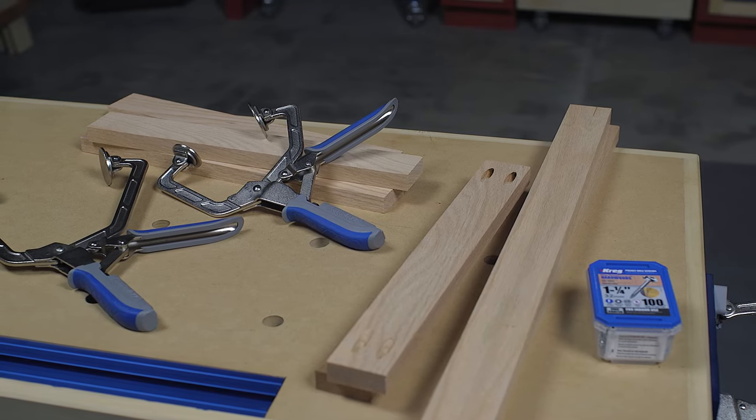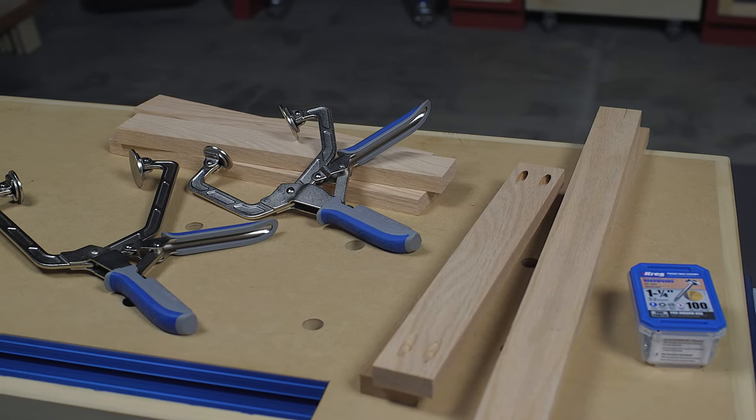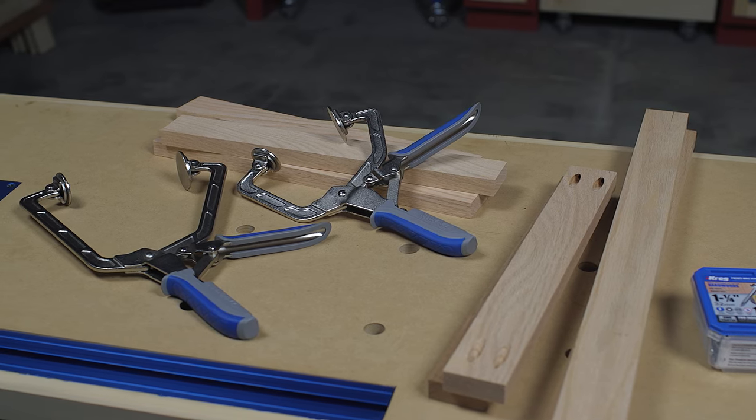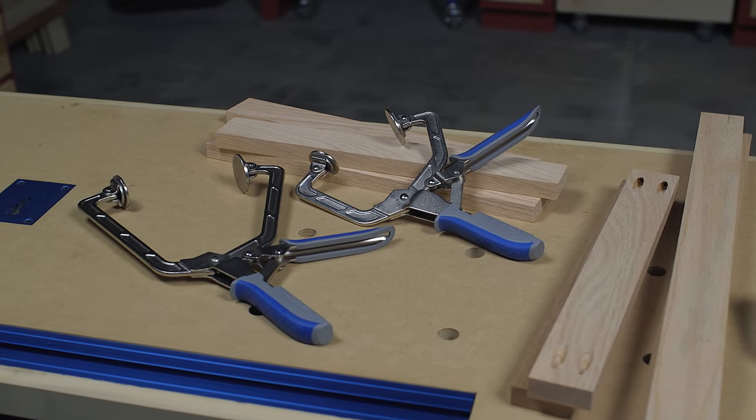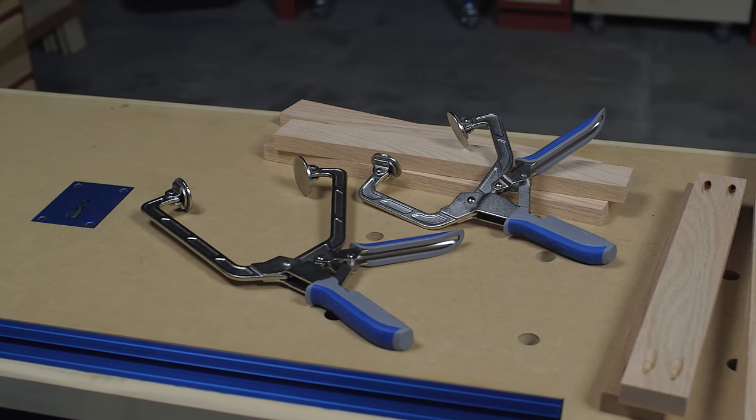Wood project clamps are available in two sizes. One has a three inch reach and holds materials up to three inch thick, while the other has a six inch reach and holds materials up to five inch thick.